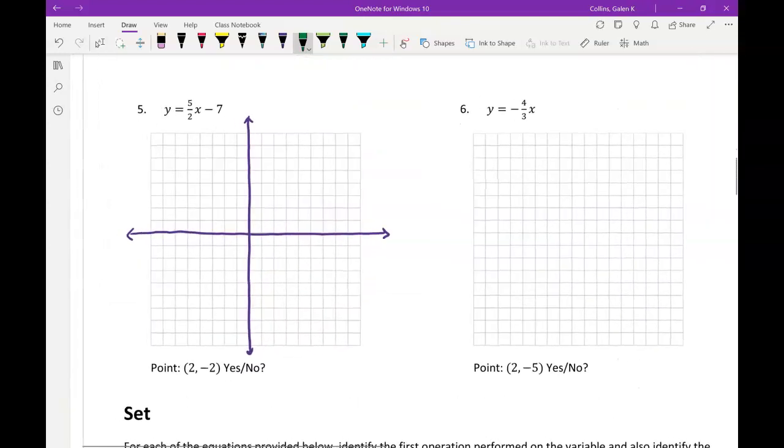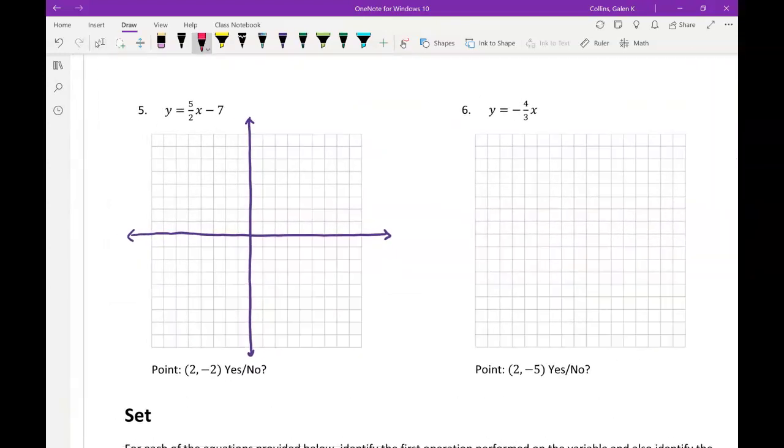Lastly, number 5. We've got a y-intercept of negative 7, a slope of 5 halves. So I'm going to go down 1, 2, 3, 4, 5, 6, 7. There's my y-intercept, negative 7.